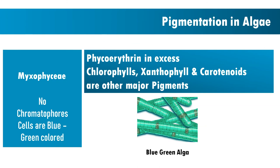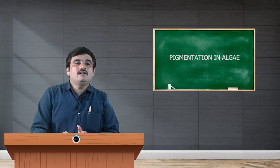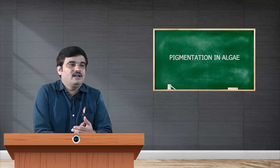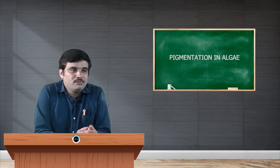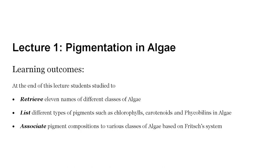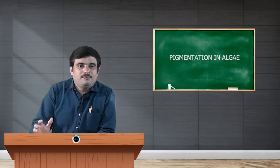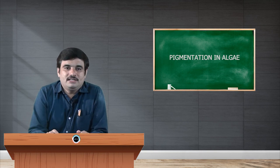Myxophyceae is notable in that no chromatophores are present, because these organisms are prokaryotes. Their cells emit blue color due to phycoerythrin, along with chlorophylls, xanthophylls, and carotenoids. As learning outcomes, we are now able to retrieve the 11 classes of algae, list pigment types such as chlorophylls, carotenoids, and phycobilins, and associate pigment compositions to each class based on the Frisch system.